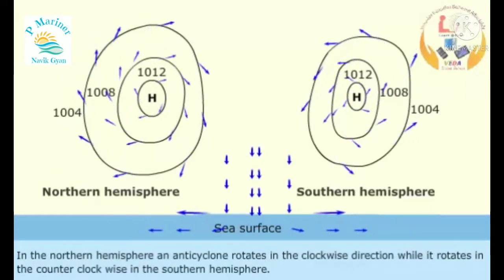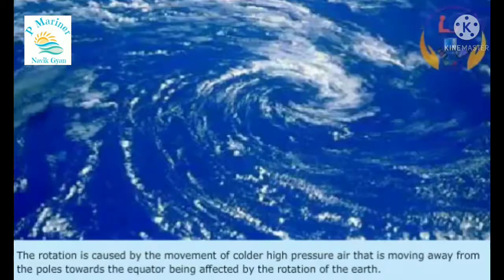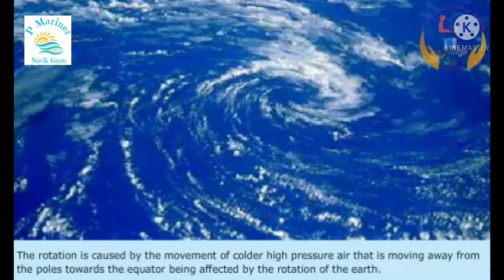In the northern hemisphere, an anticyclone rotates in a clockwise direction, while it rotates counterclockwise in the southern hemisphere. The rotation is caused by the movement of colder higher pressure air that is moving away from the poles towards the equator being affected by the rotation of the Earth.